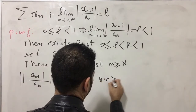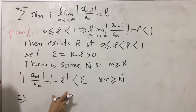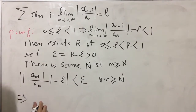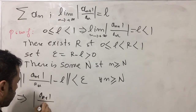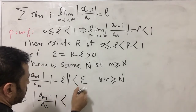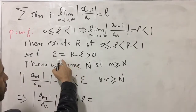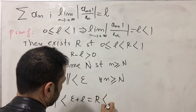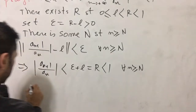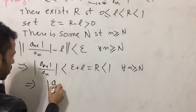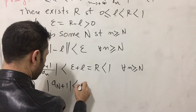For all n ≥ capital N, working on the right-hand side of this inequality, we have |a_{n+1} / a_n| < epsilon + L. Since epsilon + L = R, which is strictly less than 1, this implies that |a_{n+1}| < R · |a_n| for all n ≥ capital N.